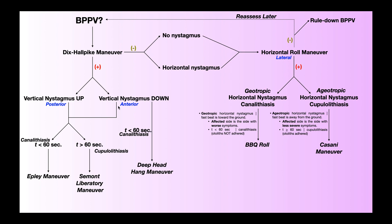In general, the treatment options for anterior canal BPPV are similar to what we see for posterior canal BPPV. If a Dix-Hall-Pike maneuver reproduces vertical downbeating nystagmus implicating the anterior semicircular canal, and that downbeating nystagmus lasts less than 60 seconds, you have an anterior canal canalolithiasis and the treatment of choice is the Epley maneuver. If that downbeating nystagmus lasts longer than 60 seconds, you have an anterior cupulolithiasis and the treatment of choice is the Semont Liberatory maneuver.